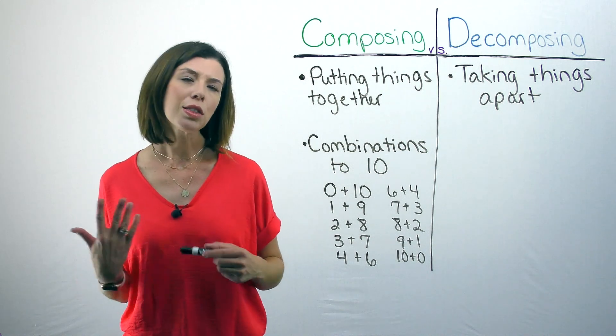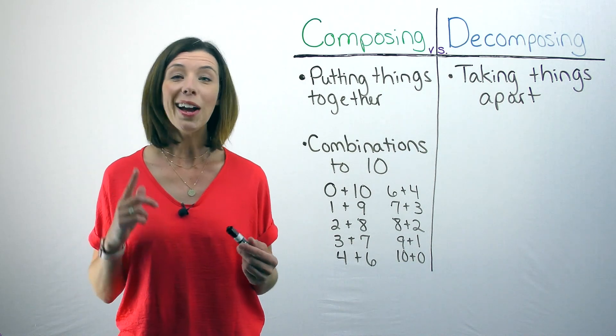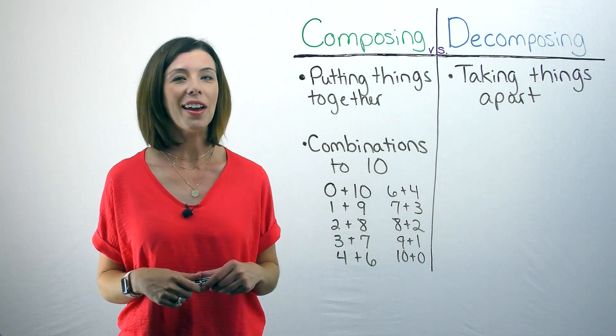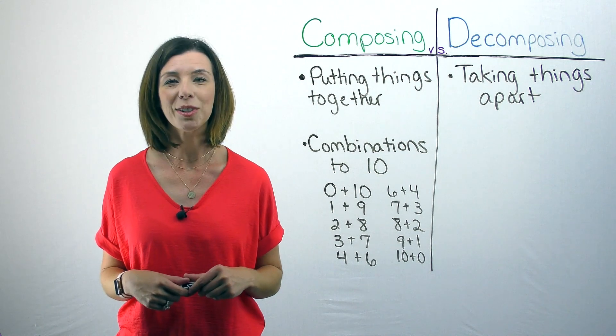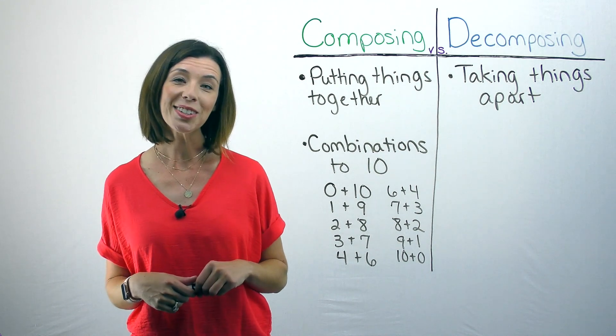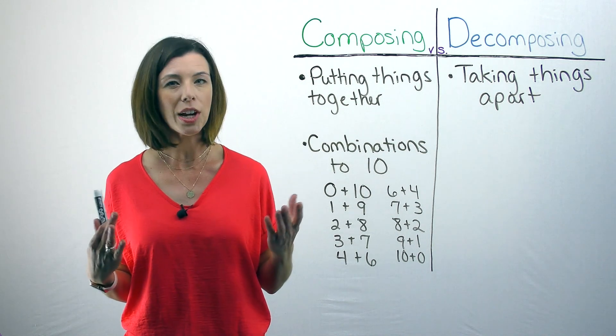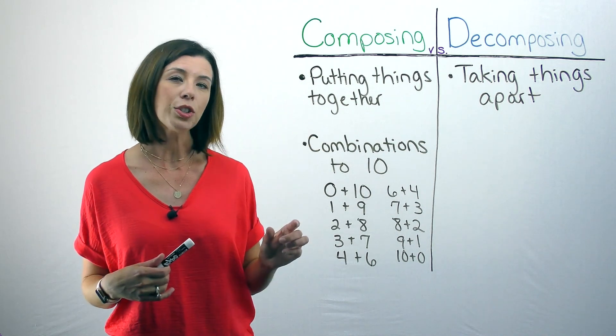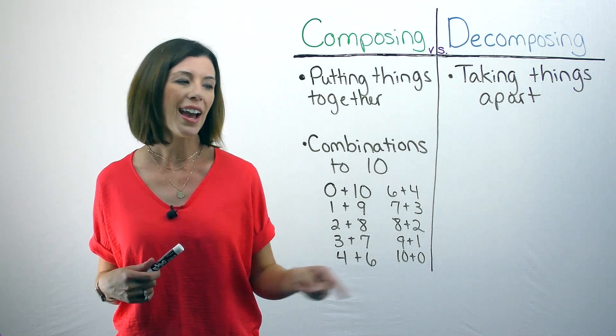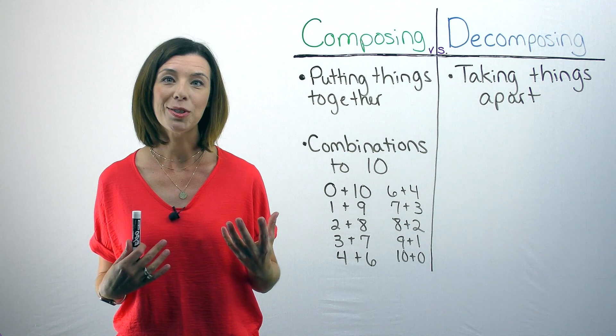If I know that three plus seven is ten, I also know that thirty plus seventy is one hundred. I also know that three hundred plus seven hundred is one thousand. I also know that thirty thousand plus seventy thousand is one hundred thousand. You get the gist. Once I know these combinations to ten, because I live in a base ten world, suddenly I know a lot more facts than just my combinations to ten.